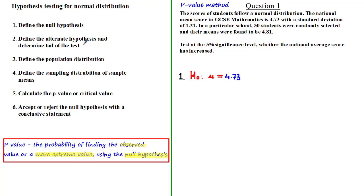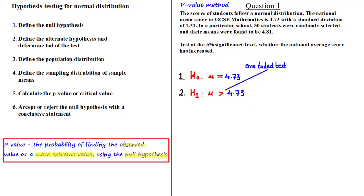Next we need to define the alternate hypothesis H1 and determine the tail of the test. The key thing to look out for is what we've been asked to test. Here we've been asked to test whether the average score has increased, so the alternate hypothesis is H1: μ > 4.73, making this a one-tailed test. We can tell which tail by noting that the sample mean 4.81 is greater than the population mean 4.73, so we look at the upper tail — the green shaded area under the normal curve — which is the p-value we'll calculate later.